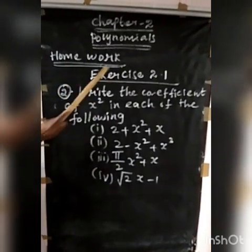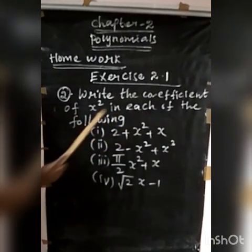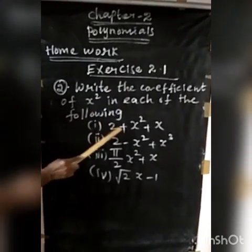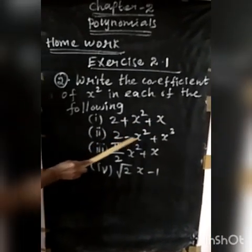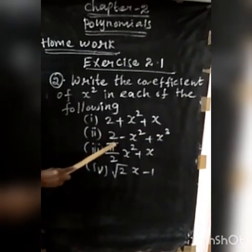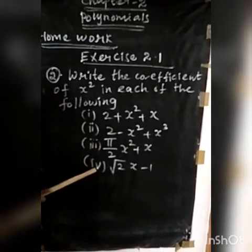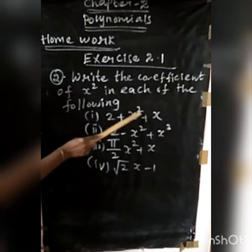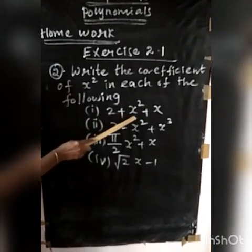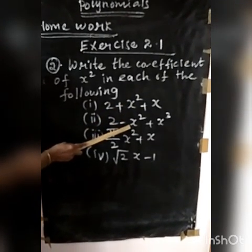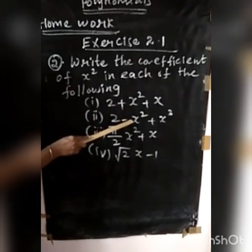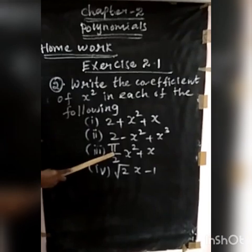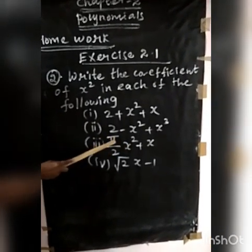Next, Exercise 2.1: write the coefficient of X squared in each of the following. First sum: 2 plus X squared plus X — the coefficient of X squared is 1. Second sum: 2 minus X squared plus X cubed — the coefficient of X squared is minus 1. Third sum: Y over 2 times X squared plus X — the coefficient of X squared is Y over 2. Fourth sum: root 2 times X minus 1.